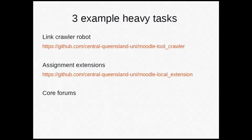I'm choosing these three examples because they've got different load characteristics. The first one is the link crawling robot. It's like Google — it goes and scrapes your pages, looks for broken, slow links, and reports on them.